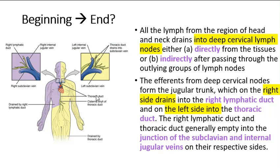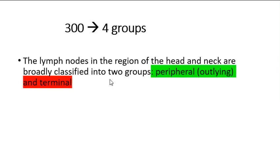Before going to the beginning of the lymph nodes, let's start where they terminate. All of the lymph from the region of the head and neck eventually drains directly or indirectly into the deep cervical lymph nodes. From here, the efferents from the deep cervical nodes form the jugular trunk, which on the right side drains into the right lymphatic duct and on the left side drains into the thoracic duct, at the junction of the internal jugular vein and the subclavian vein on their respective sides.